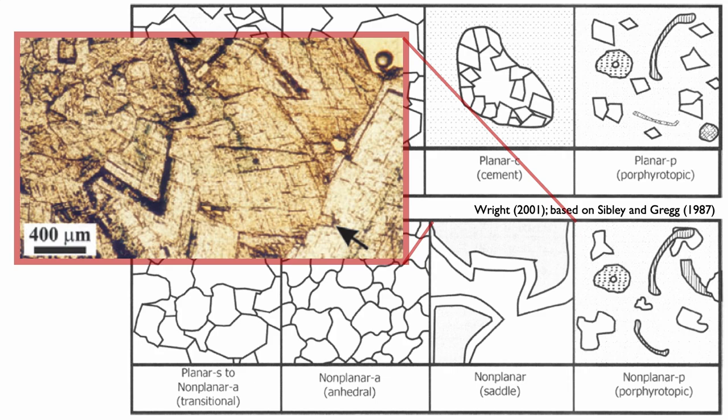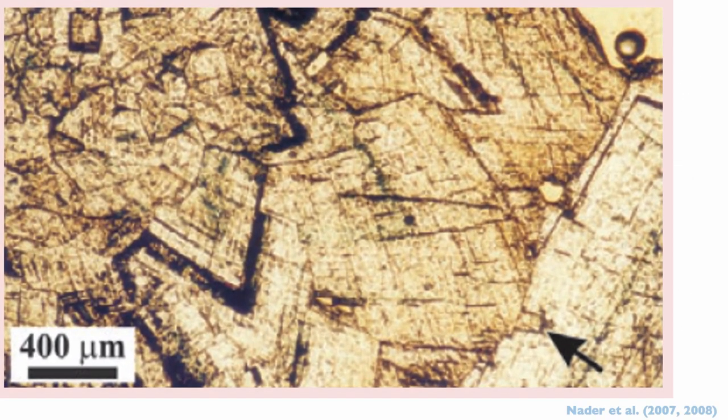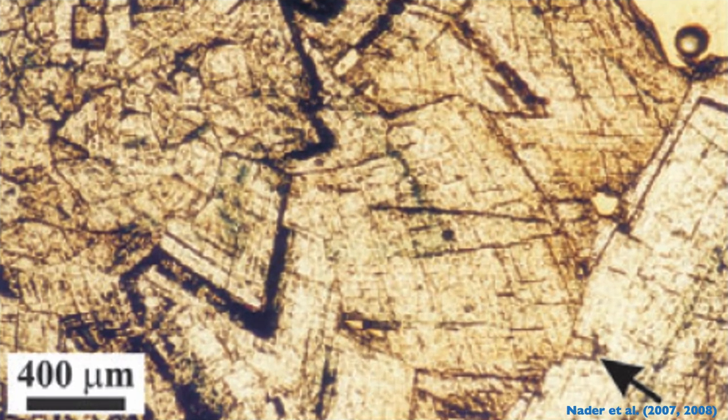Finally, let's look at a non-planar saddle dolomite. You can recognize the saddle dolomite because of its saddle shape — this slightly bent shape. Look at the scale: this is 400 microns, so this is a relatively large dolomite mineral. And it is again typical for warm, non-diagenetic conditions.